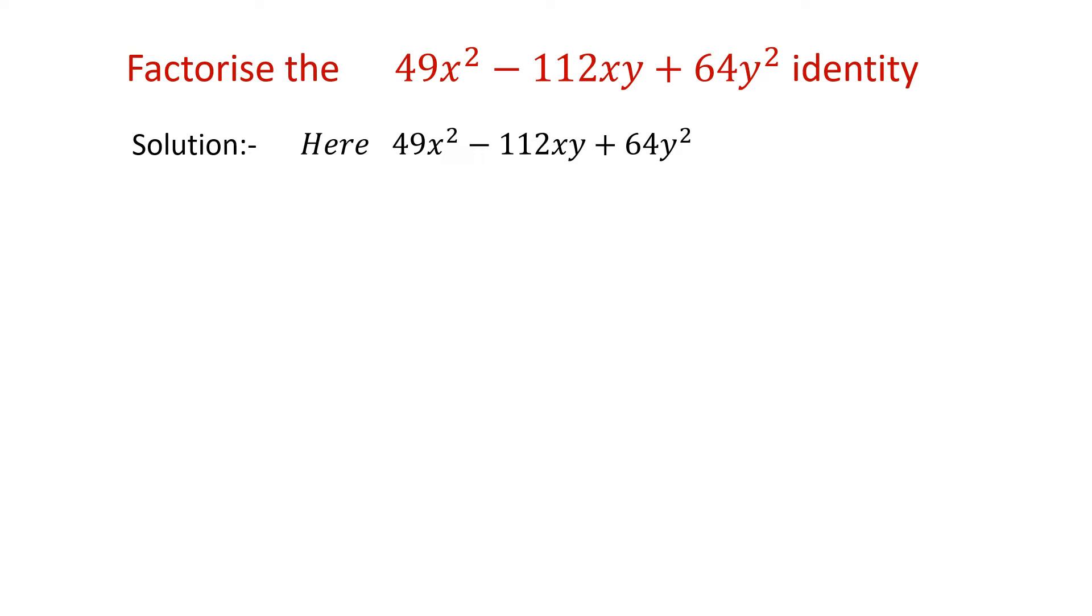So first thing, let's take the given problem that is 49x square minus 112xy plus 64y square. Here we have to see that this is in the form of an identity.